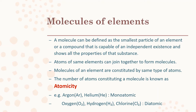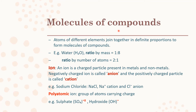Moving on to molecules of compounds — a compound is two different elements combined together in a definite proportion. This definite proportion can be expressed in two ways: ratio by mass and ratio by number of atoms. For example, water — expressed by mass uses atomic masses (hydrogen is 1, oxygen is 8 in ratio terms), and by number of atoms it is two hydrogen atoms to one oxygen atom, i.e. 2:1.